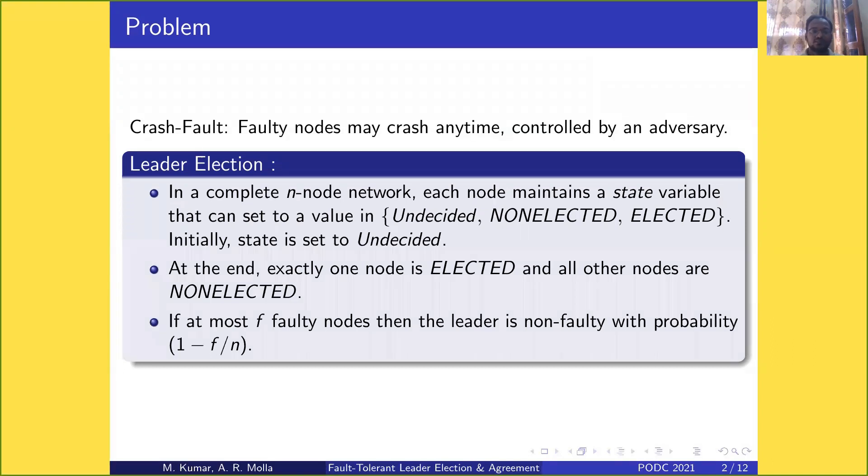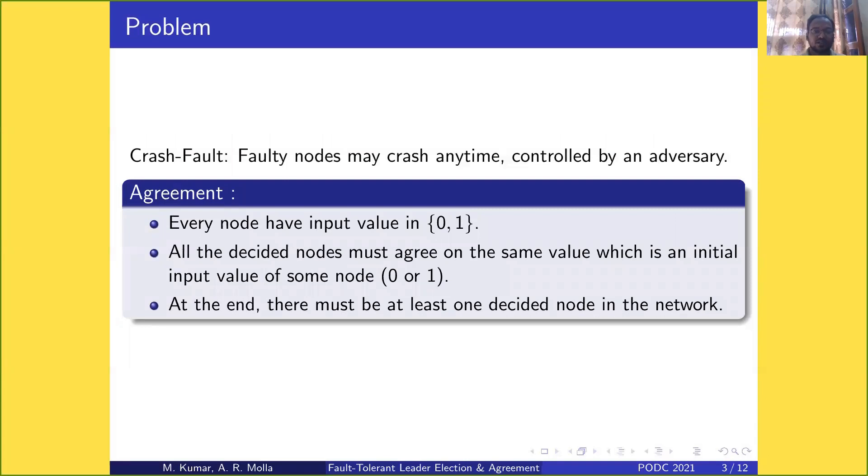The second case is agreement, where we consider binary input values which might be 0 or 1. All decided nodes must agree on the same value, which is an initial input value of some node. At the end, there must be at least one decided node in the network.